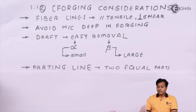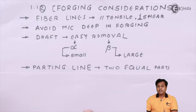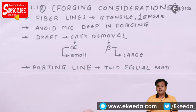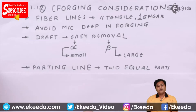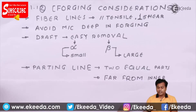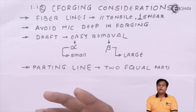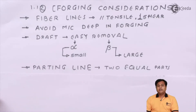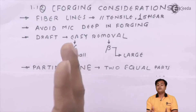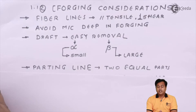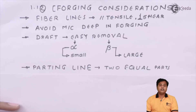Before I move to the next consideration, let me tell you that these considerations are especially for the dies and the forging material — we have to take care of them while we design the dies or the forging procedure. The next consideration is the parting line. We know that during molding, we have two different dies or cavities. We pour the material and then combine them together. The section which comes into contact with each other is highlighted by parting lines. These parting lines should be taken care of so that two equal parts will be created — as you can see in the slide, if two equal parts are created, the parting line will match very easily.